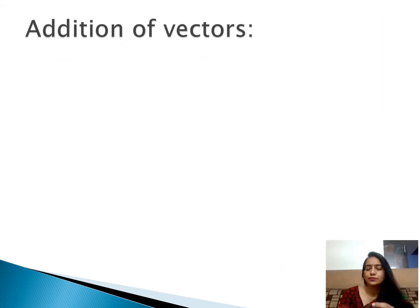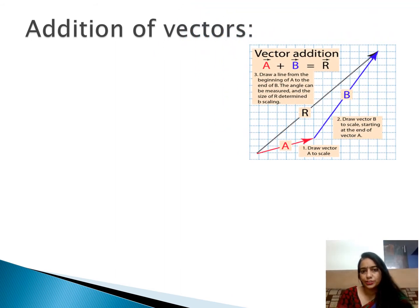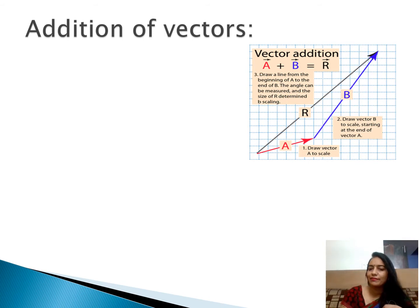Now, addition of vectors — how do we add vectors? There are two methods of addition of vectors. The first is the triangular method, and the second is the parallelogram method, which we are showing here in pictorial or graphical form. We will also see how to add vectors expressed in terms of components like a, b, c, or constants.